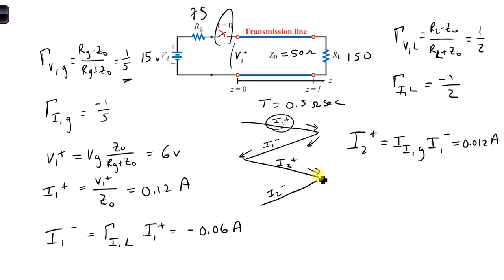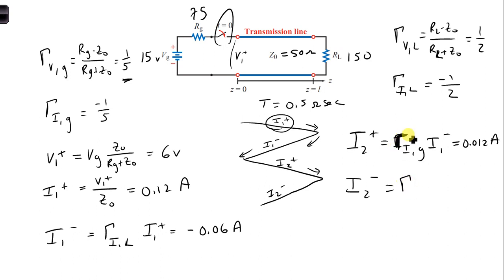And then lastly, I2 plus is incident on the load to get I2 minus. So I2 minus equals the current reflection coefficient at the load times I2 plus, which gives us minus 0.006 amps.